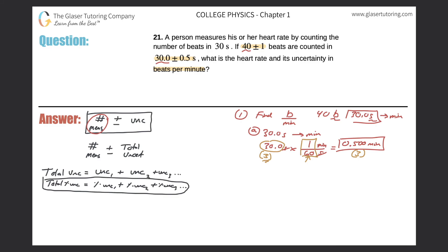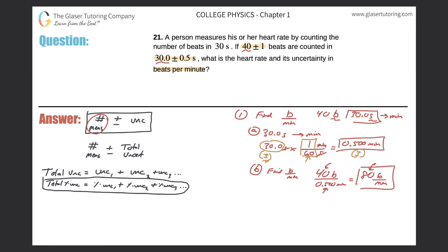Now we can finally find beats per minute. We take the 40 beats that were measured and divide by 0.500 minutes. When we calculate this, the answer comes out to be 80 beats per minute. Some might say: doesn't 40 have only one sig fig and 0.500 has three, so the answer should have only one? Yes — I didn't put a decimal there, so it does have one significant figure.